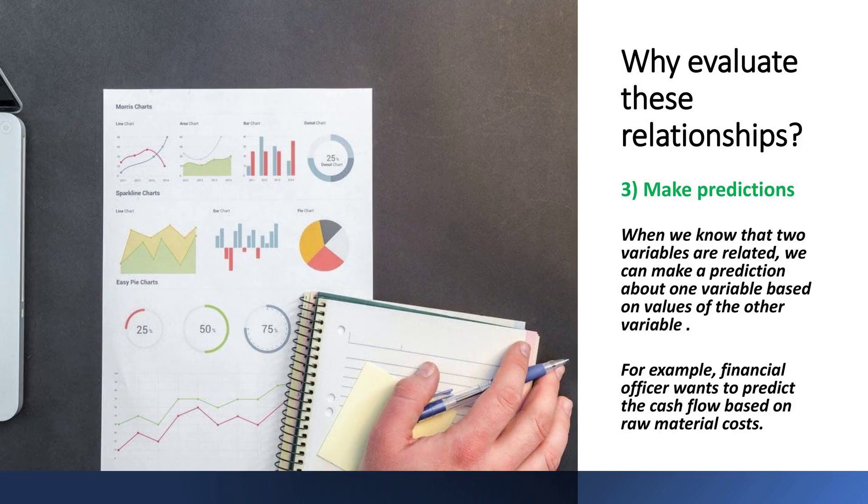When we understand the relationship between two variables, we can predict the behavior of one based on the other, leading to more informed decisions. For example, a financial officer wants to predict the cash flow based on raw material costs.